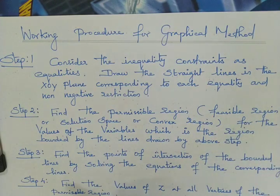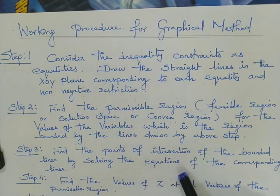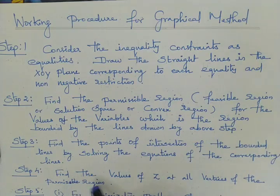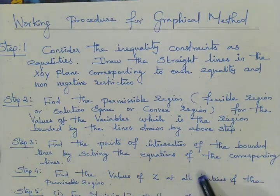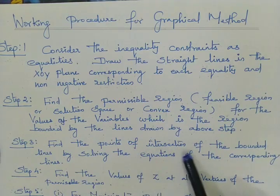Step number three: find the points of intersection of the bounding lines by solving the equations of the corresponding lines. Step number four: find the values of Z — where Z indicates the objective function — at all vertices of the permissible region. Those vertices are the intersection points found in step three. Substitute each intersection point into the objective function to find the corresponding values of Z.